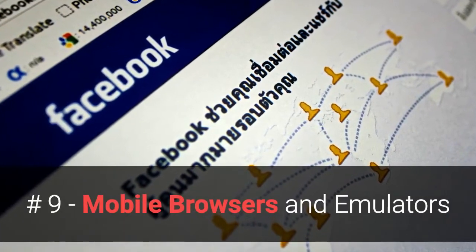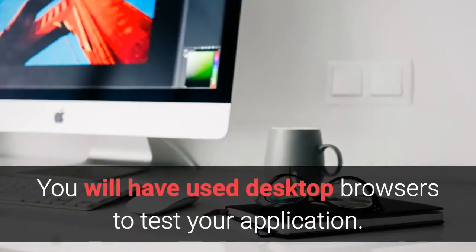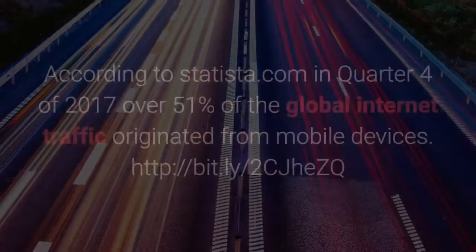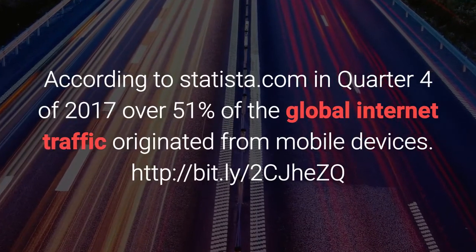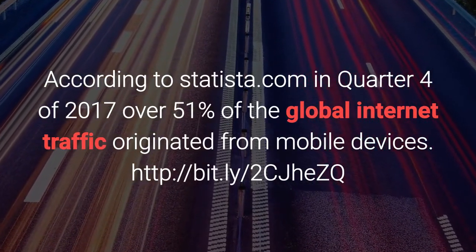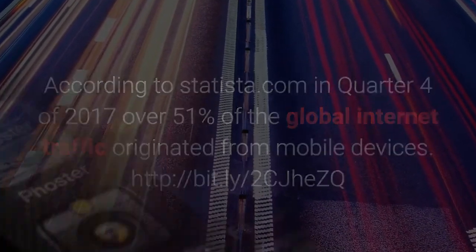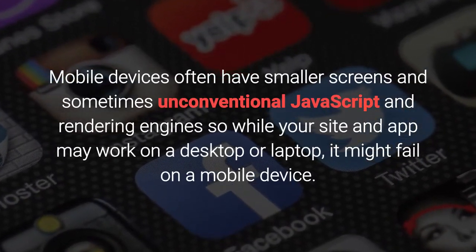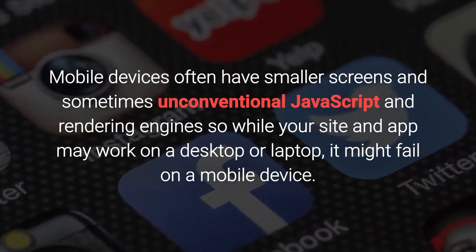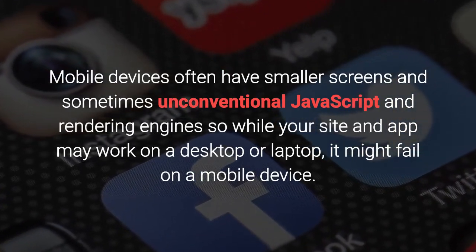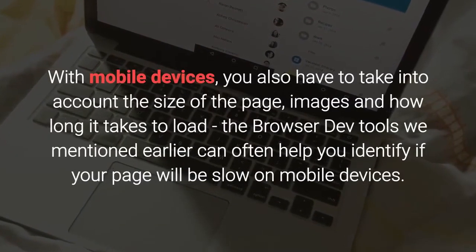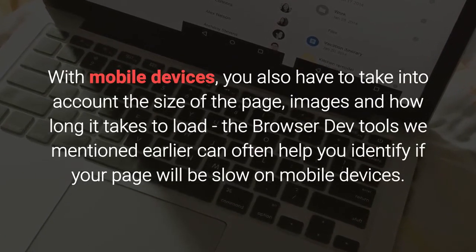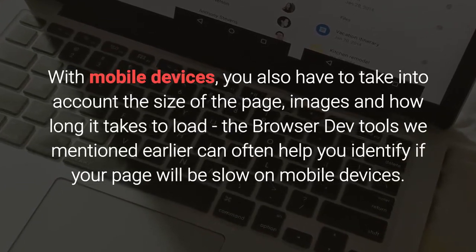Number nine: mobile browsers and emulators. You will have used desktop browsers to test your application — make sure you don't neglect mobile devices. According to Statista.com, in Q4 of 2017, over 51% of global internet traffic originated from mobile devices. Mobile devices often have smaller screens and sometimes unconventional JavaScript and HTML rendering engines, so while your site may work on a desktop or laptop, it might fail on a mobile device. With mobile devices, you also have to take into account the size of the page, images, and how long it takes to load. The browser developer tools mentioned earlier can often help you identify if your page will be slow on mobile devices.